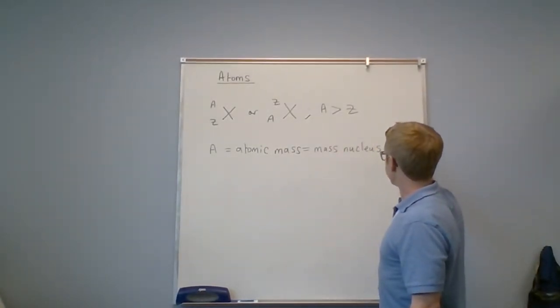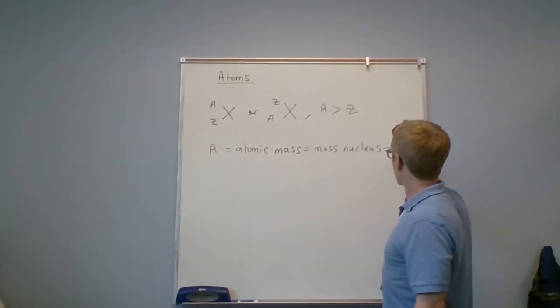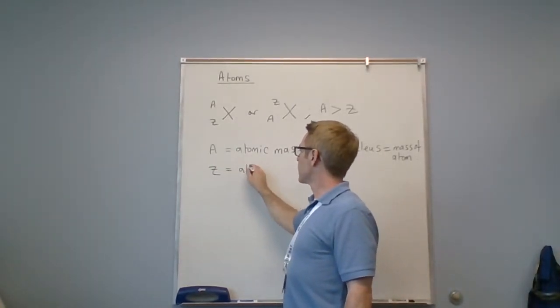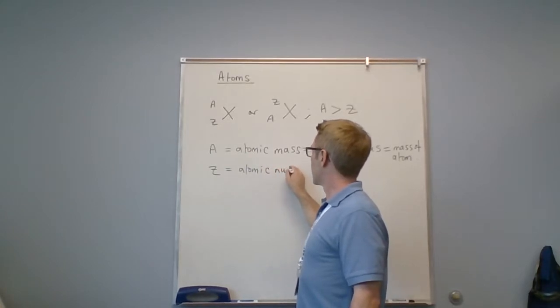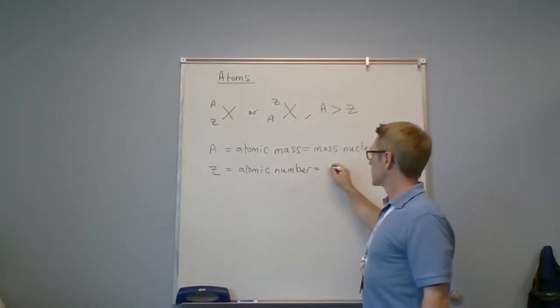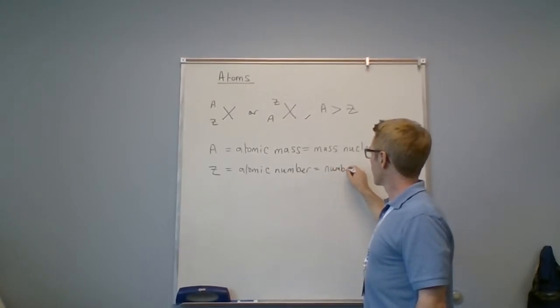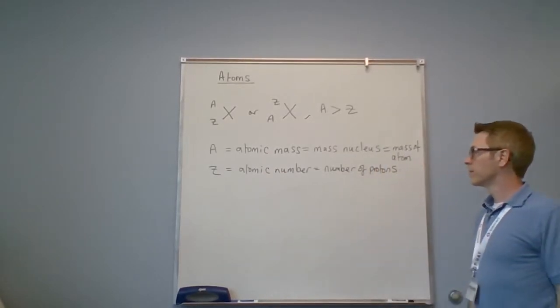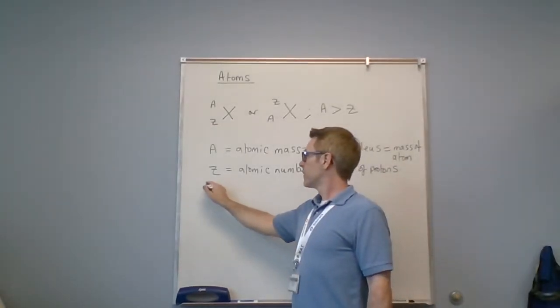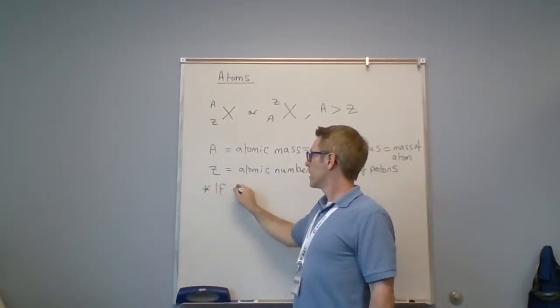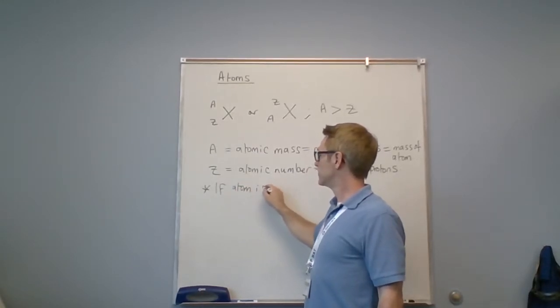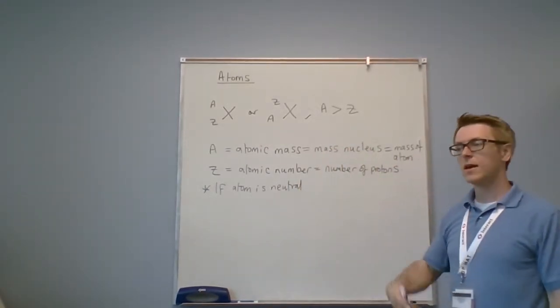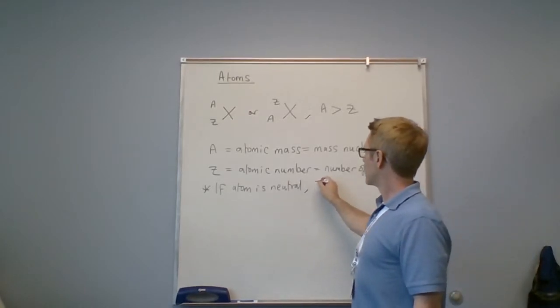Z is the atomic number, and the atomic number is the number of protons. Now, if the atom is neutral—atoms can have a charge, we'll look at charges later—but if we have a neutral atom, then Z is also equal to the number of electrons.